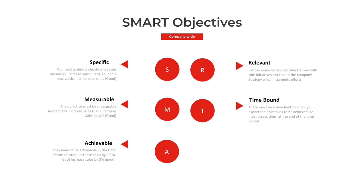Relevant is important because far too many department leaders — the second they leave a strategy session — get sidetracked by side projects that don't push the initiatives forward. It's always important to reassess: is this objective relevant to the overall goals of the company? And obviously it needs to be time-bound — put a time limit on when you'll achieve it, whether monthly, quarterly, or annually. At the end of that time period, go back and measure: did we hit 80%, 100%, 110% of that goal? How can we do better next time?